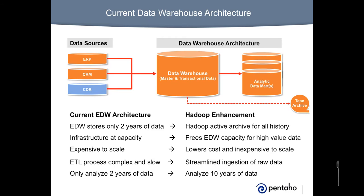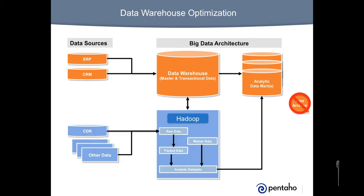Let's look at a typical data warehouse architecture for a company capturing huge amounts of call detail records, or CDR data, represented by the blue data source on the left. This data warehouse is at capacity with only two years of CDR data, and nightly ETL workloads are complex, resource-intensive processes that run most of the night. The company needs to analyze a full 10 years of calling data, yet most of the historical data resides on a taped archive. The company continues to grow while this data warehouse architecture is not meeting their needs, and scaling it is too cost-prohibitive.